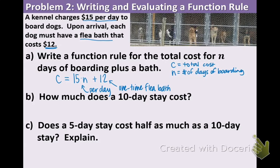Part B says, how much does a 10-day stay cost? What do you think we should do with 10? 10 is the number of days of boarding. So we're going to write N equals 10. And like we normally do, we're going to plug that in or substitute it in for the N. So C equals 15 times 10 plus 12. Using the 10 trick, you can just do 15 times 1. That's 15. Put a zero after that. That's 150. And you're adding 12. When you add those together, you get 162. So $162 for a 10-day stay.